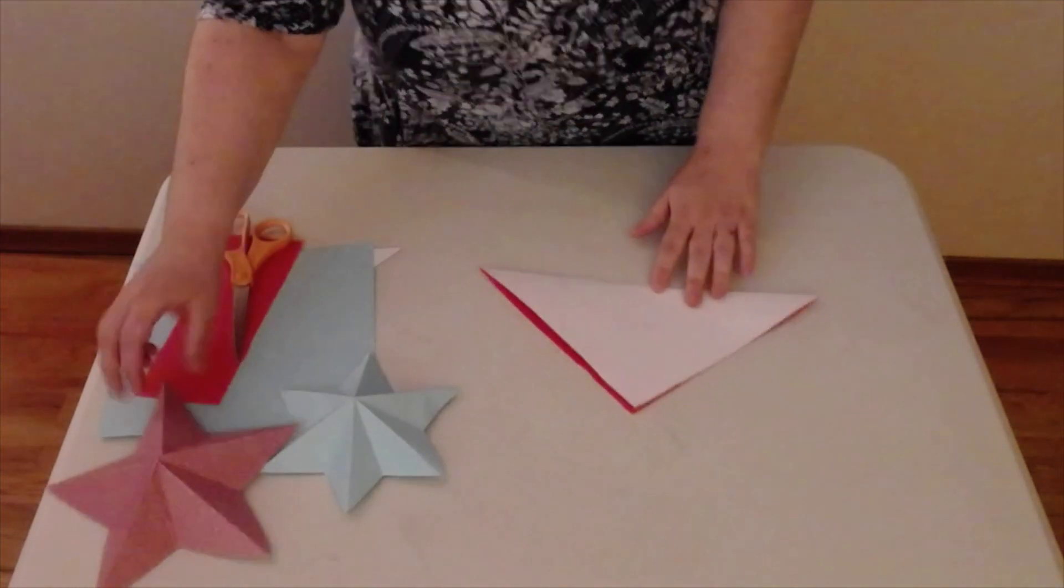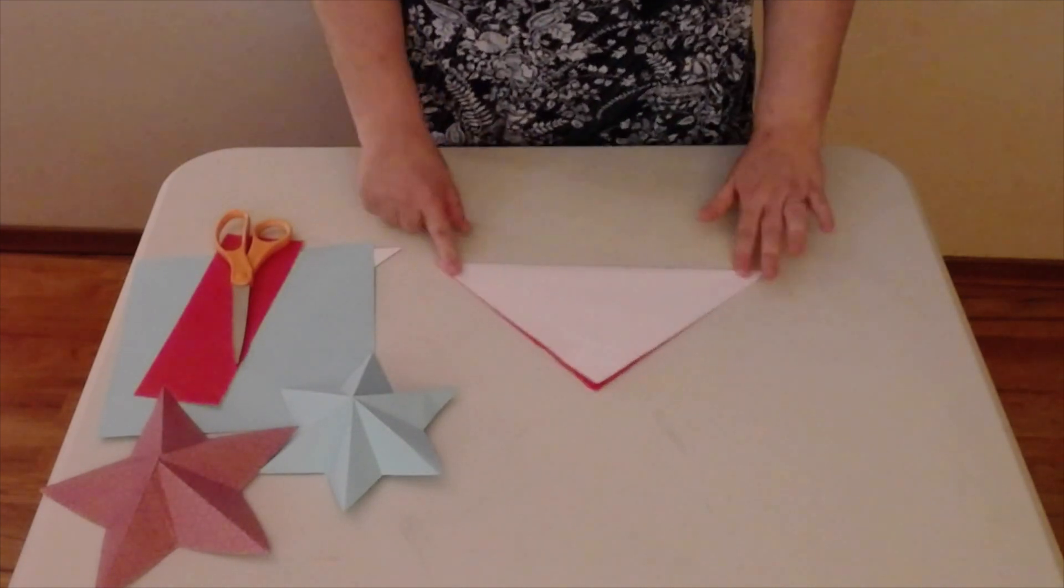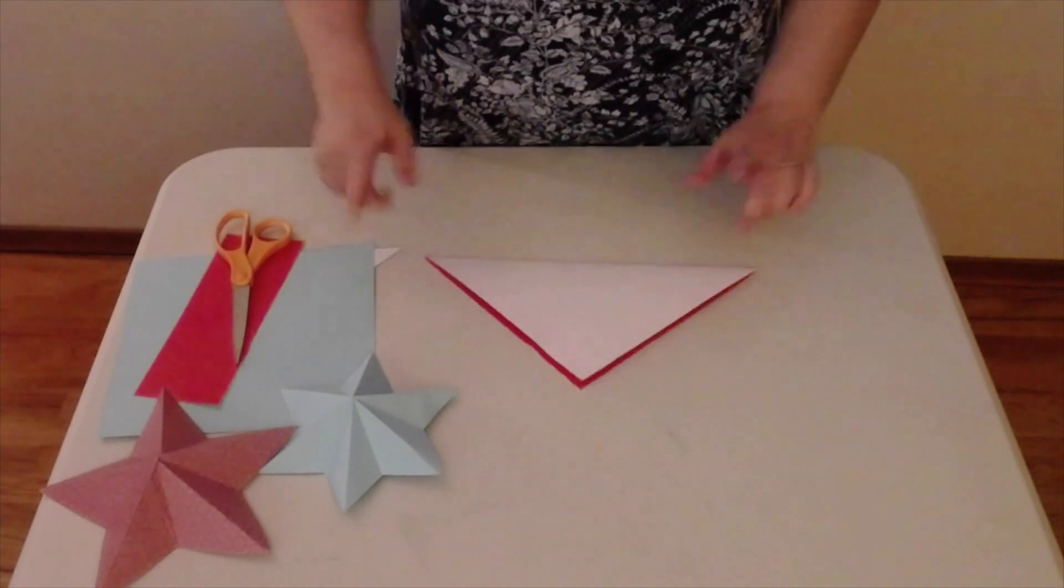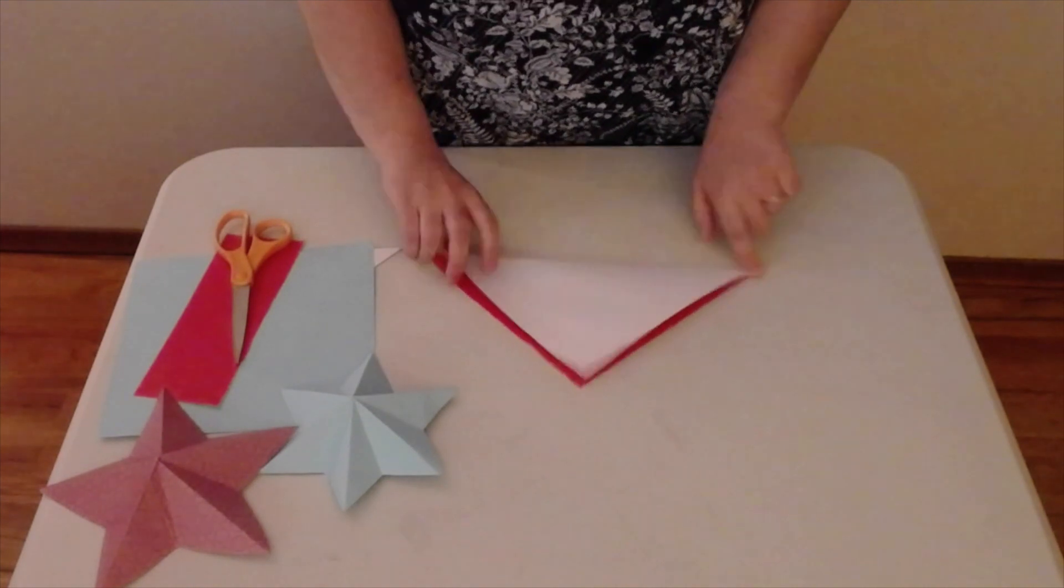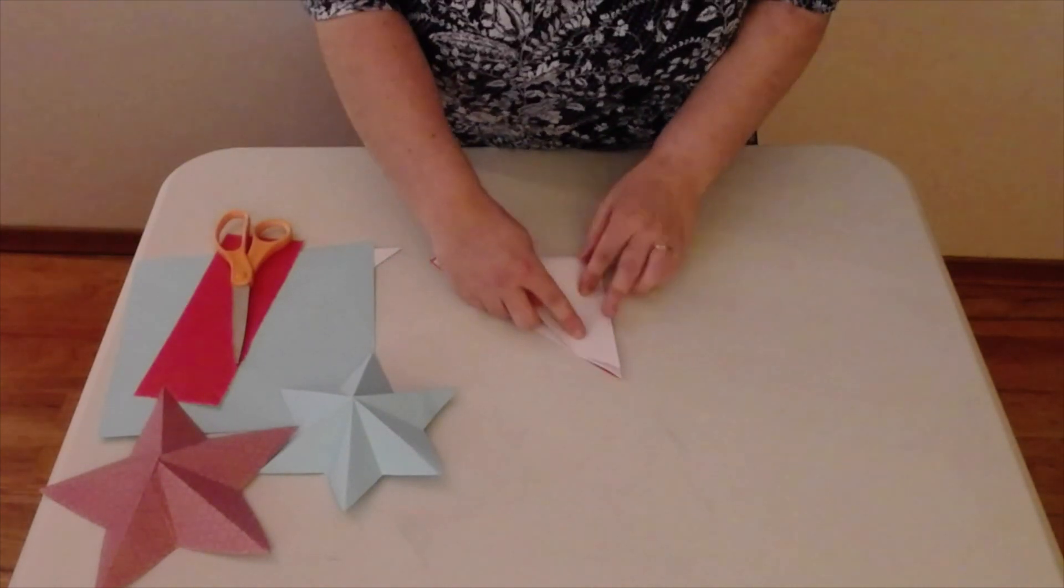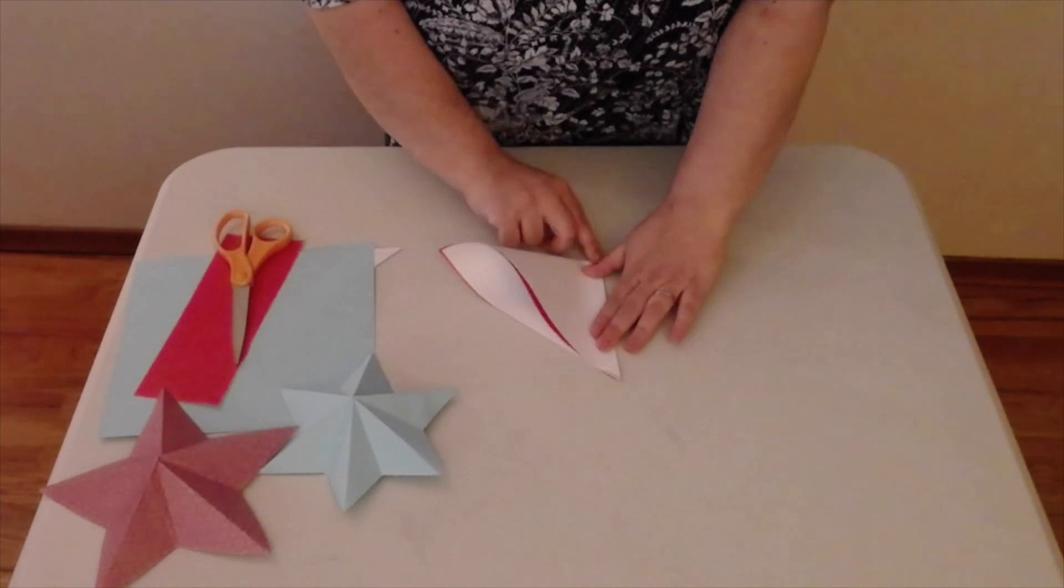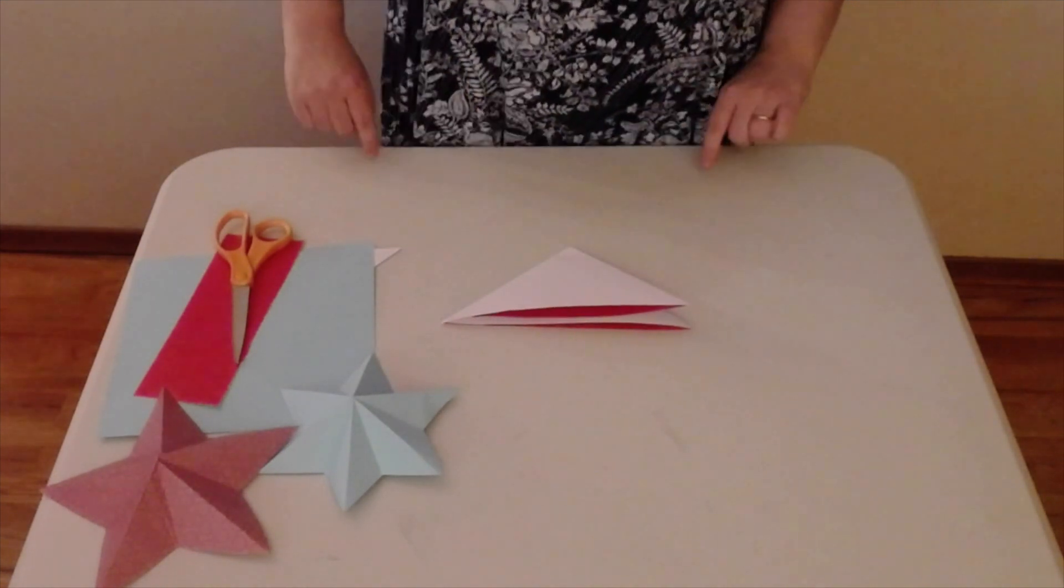So we're going to start with our six-sided stars because we already have our triangle made. Now since you have your triangle you're going to take one corner and fold it over to the other corner just like this. So I'm going to just make a triangle a little bit smaller.